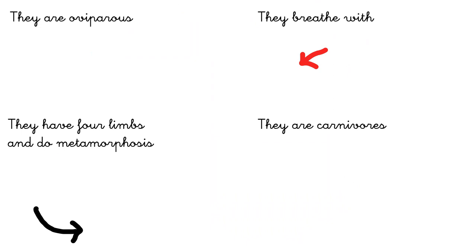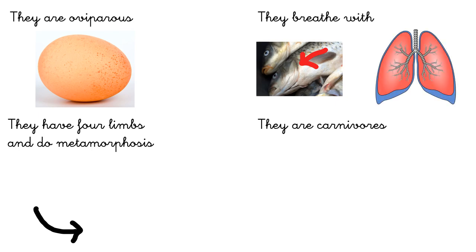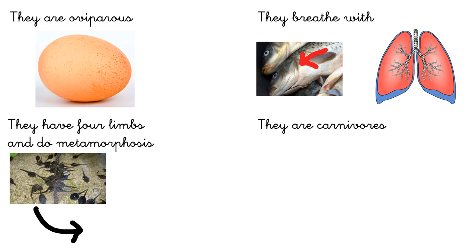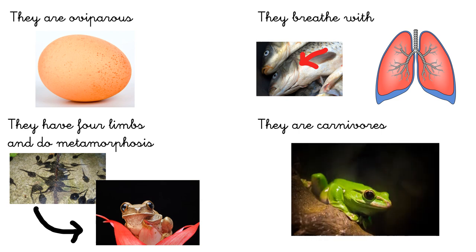Amphibians. They are oviparous, so they are born from an egg. They breathe with gills when they are babies, and with lungs when they are adults. They have four limbs and do metamorphosis. It means that they are born from an egg, they become tadpoles, and after this they become a frog. And they are carnivores — they eat animals.